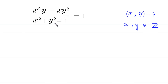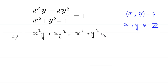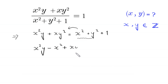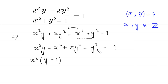We multiply both sides by (x² + y² + 1), giving x²y + xy² = x² + y² + 1. Moving x² and y² to the left-hand side, we get x²y - x² + xy² - y² = 1. From the first two terms we factor out x², giving x²(y - 1), and from the last two terms we factor out y², giving y²(x - 1), so x²(y-1) + y²(x-1) = 1.